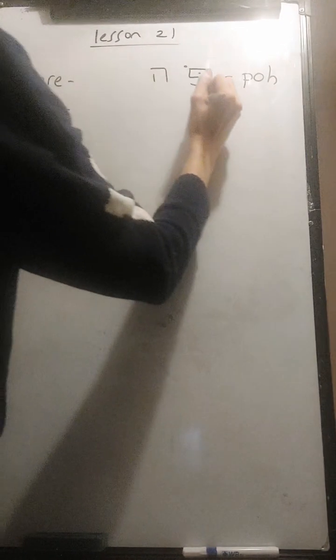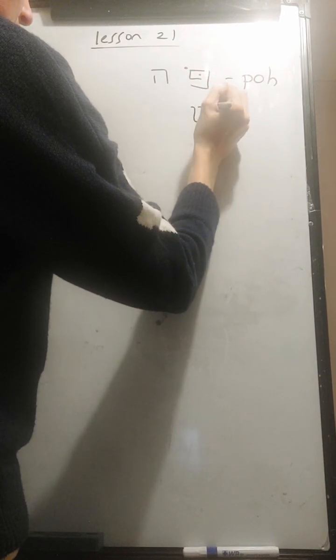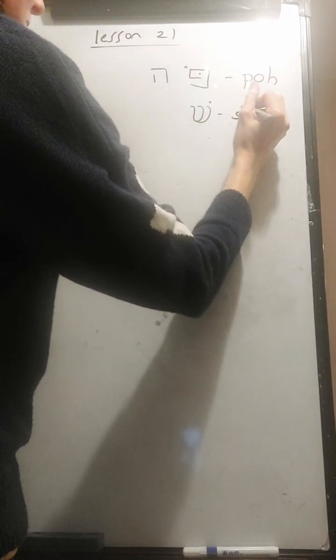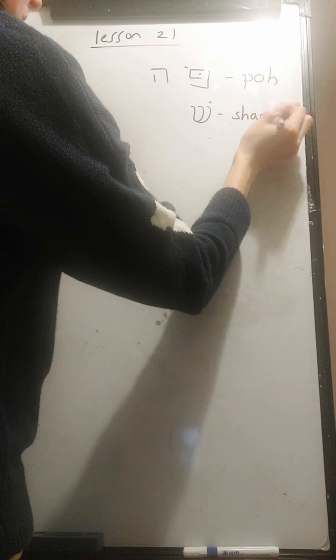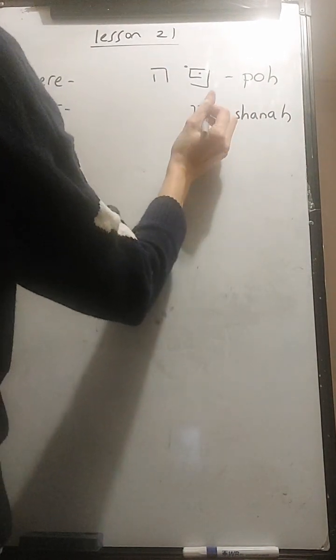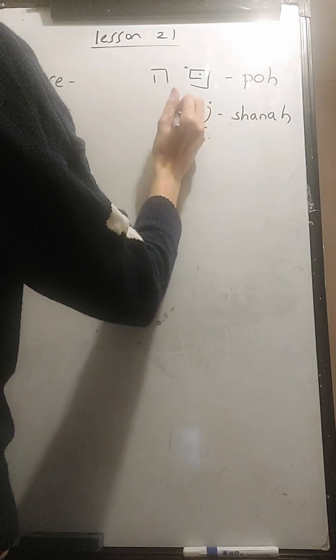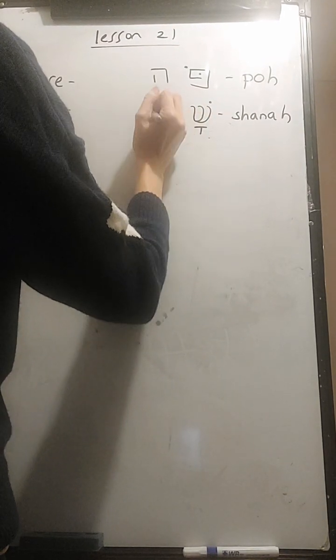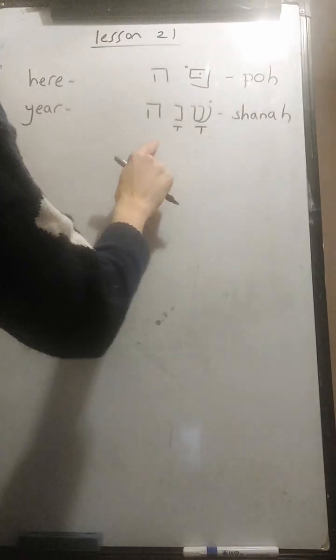You. So to say the word you, we'd use the shin. It's going to sound as shanah. So we need the SH. The A vowel underneath. SHA. N. Shanah.